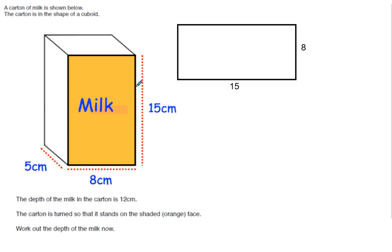A carton of milk is shown below, the carton is in the shape of a cuboid, 15 by 8 by 5. The depth of the milk in the carton is 12. So it's not quite 15, it's just filled up to there. The carton is turned, so it stands on the shaded orange face. So you can see, if you tilt it, that will be the base of it. Work out the depth of the milk now. What I wanted to show you is that was the base, so that orange face is going to be there.